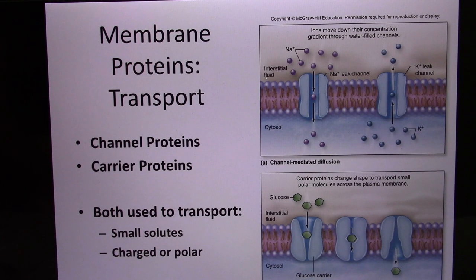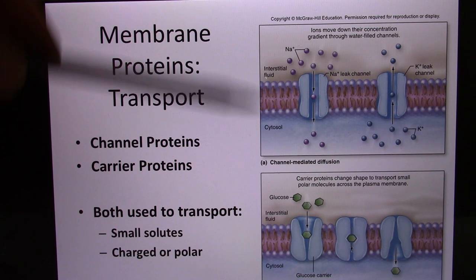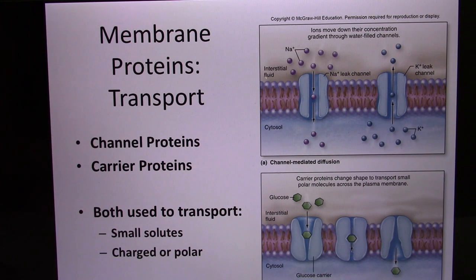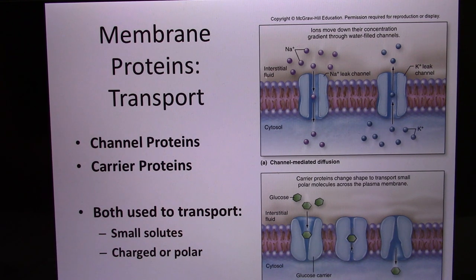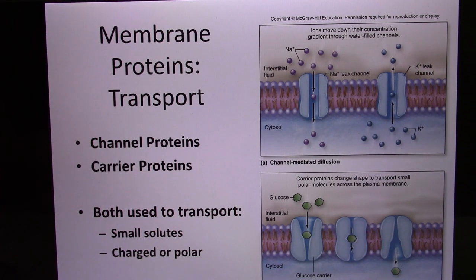In this chapter, we focus on the membrane protein. The membrane proteins include the channel and the carrier. They make the molecules move from the high concentration to the low concentration area, and they are used to transport small molecules and charged particles. Examples include the sodium channel and the glucose carrier.